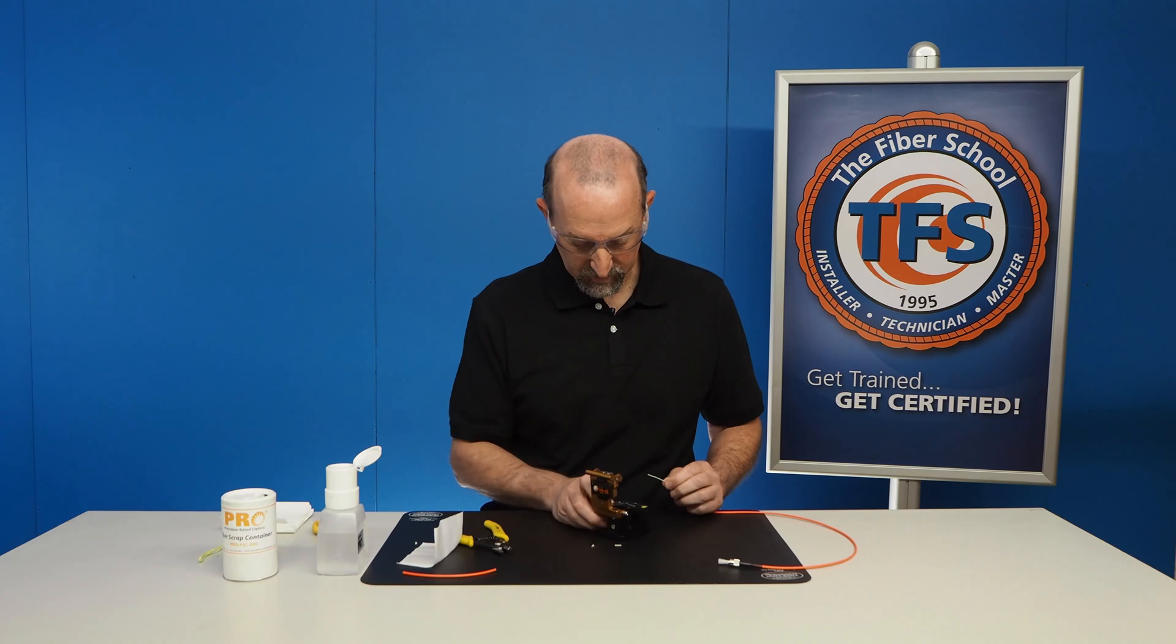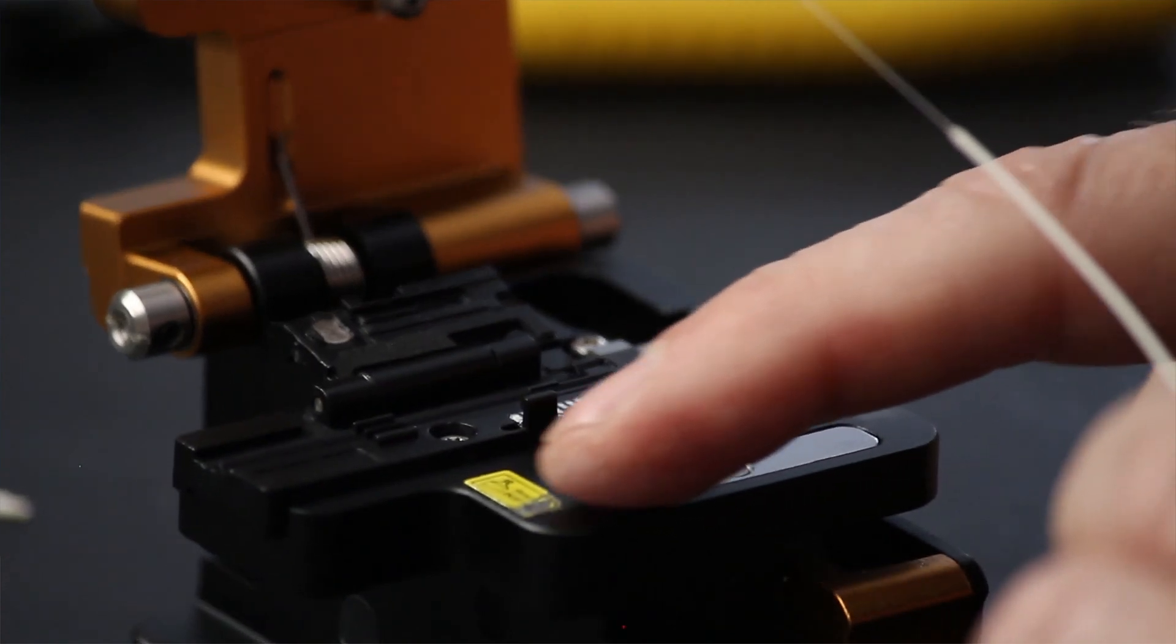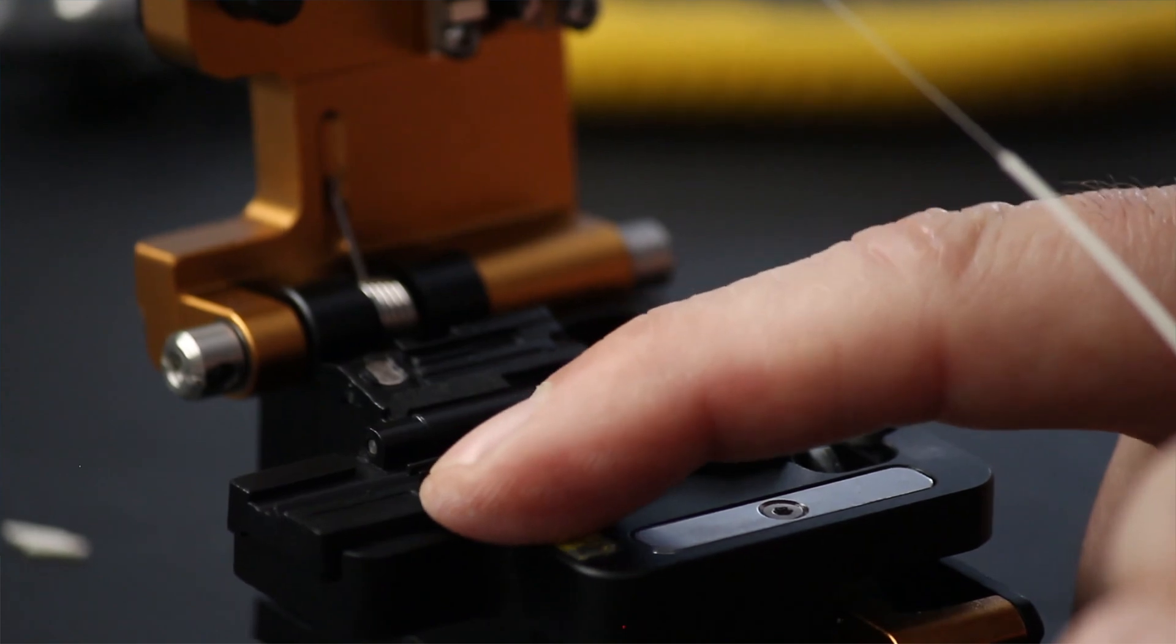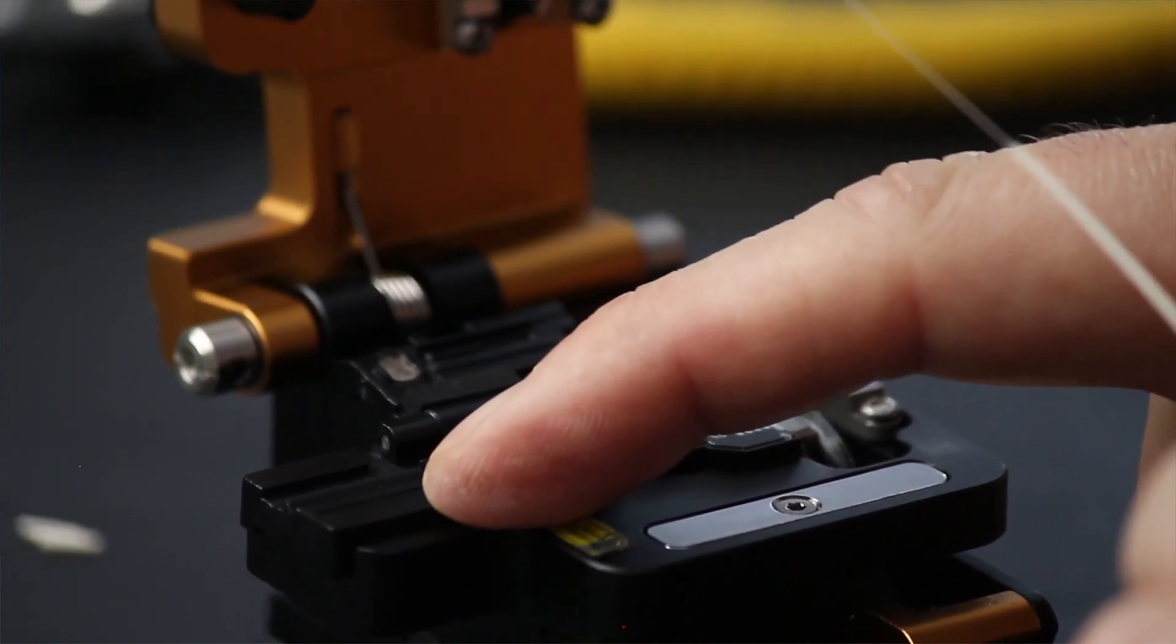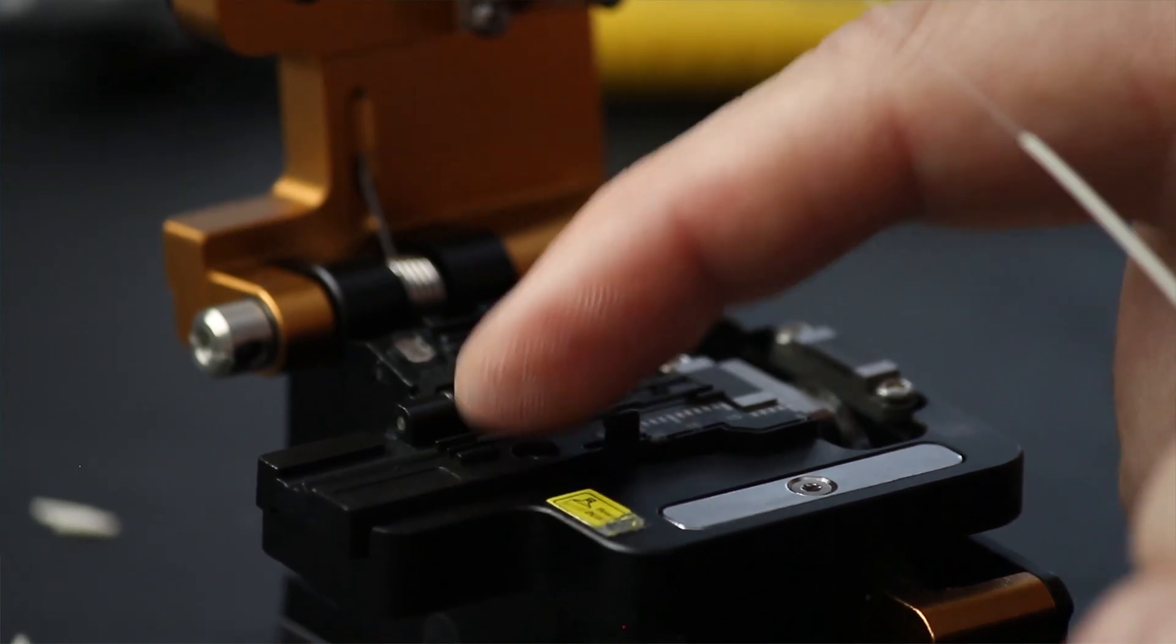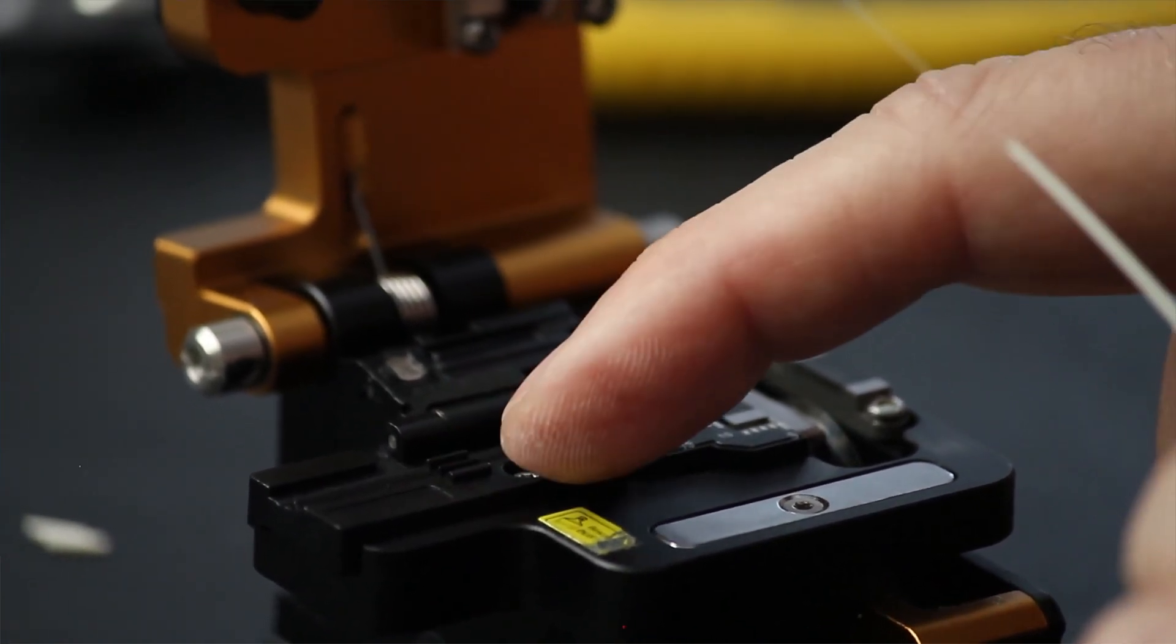So with our precision cleaver here, we have a scale. And this will tell us how much fiber we're supposed to take off. And it also has three channels in it for three different fiber sizes. You have the first channel is a 250 micron. The second one is the 900 micron. And the third one, you can use it for two or three millimeter. So we're going to go in the middle one.